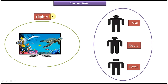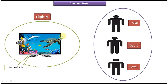That is the use of the Flipkart shopping site. In the right side you can see there are 3 persons — John, David and Peter. Suppose John, David and Peter want to buy a LED TV from the Flipkart site. So they will login to the portal, search for the LED TV, and try to purchase it. But when they try to purchase the LED TV, that LED TV is not available.